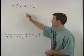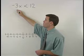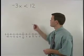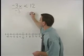In this problem, since x is being multiplied by negative 3 on the left side of the inequality, to get x by itself, we divide both sides by negative 3.